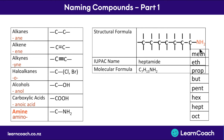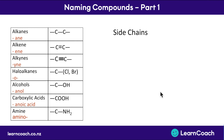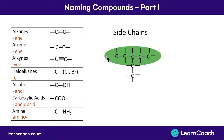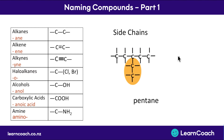Now that we've learned all the prefixes and the endings for different types of molecules, we'll look at the final few rules for naming - specifically side chains. Here we have five carbons in a row (pentane) with two extra carbons coming off the side. Those two extra carbons have the prefix 'eth' and we add 'yl' for any side chain, making it an ethyl group. We put it in front of the main name and specify which carbon it's attached to. It's attached to the third main carbon, so the name is 3-ethylpentane.